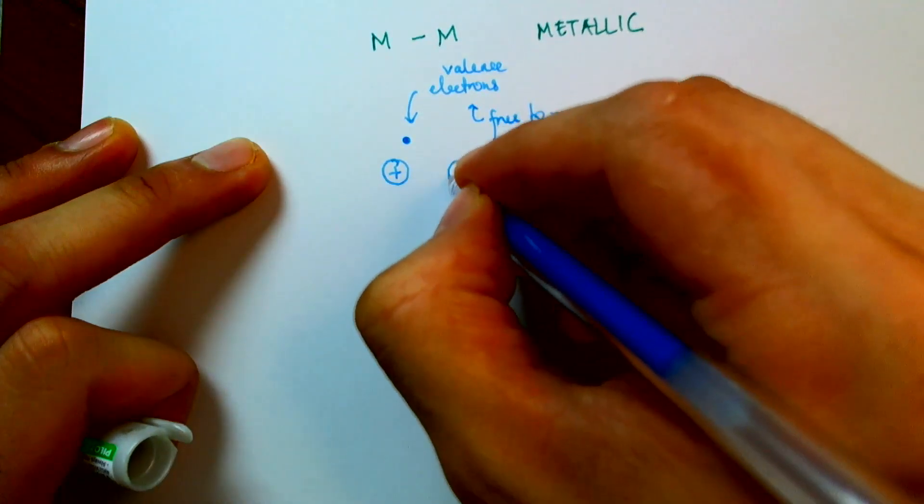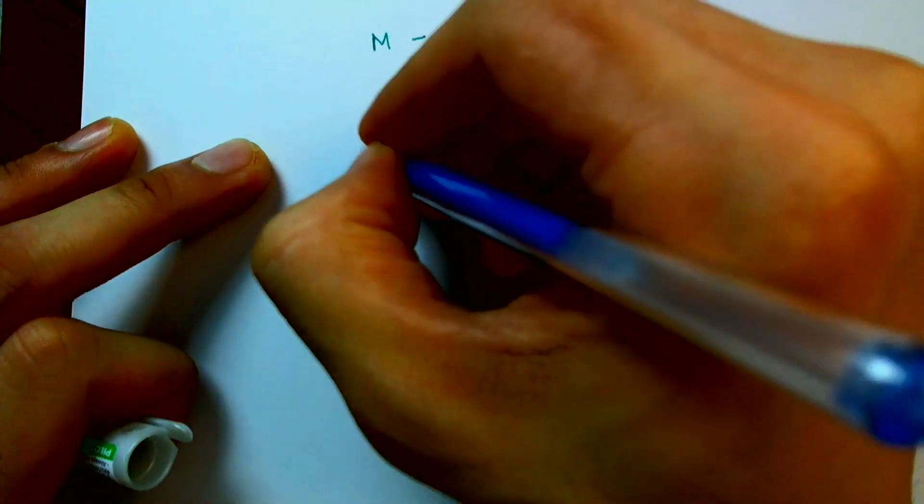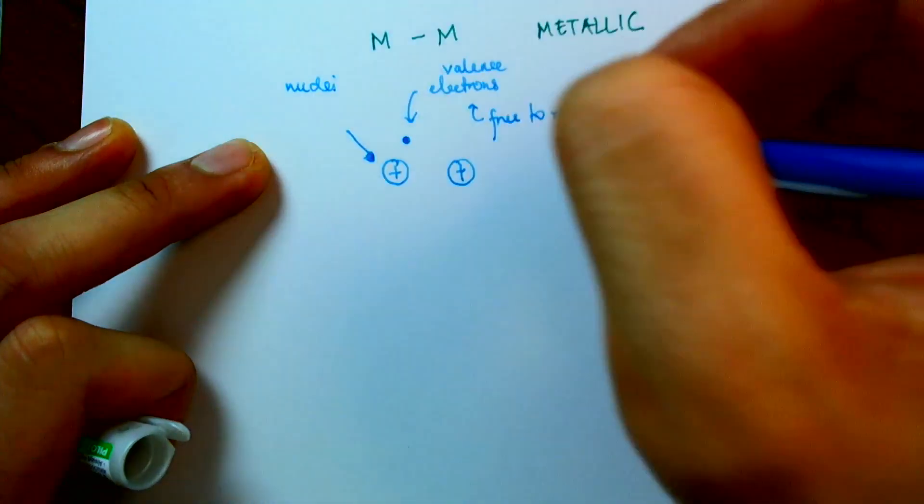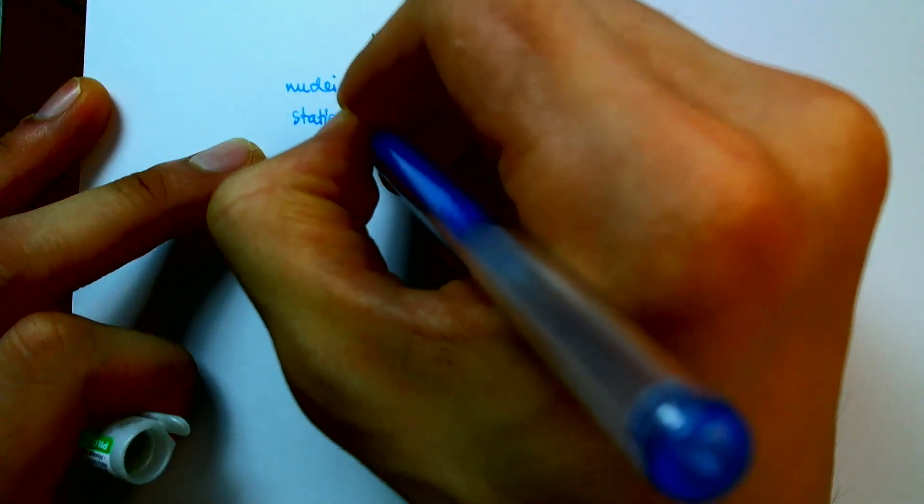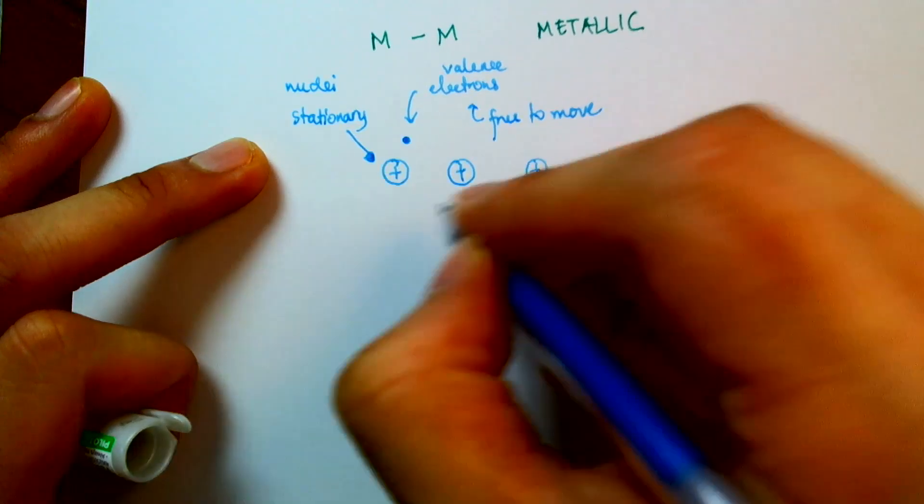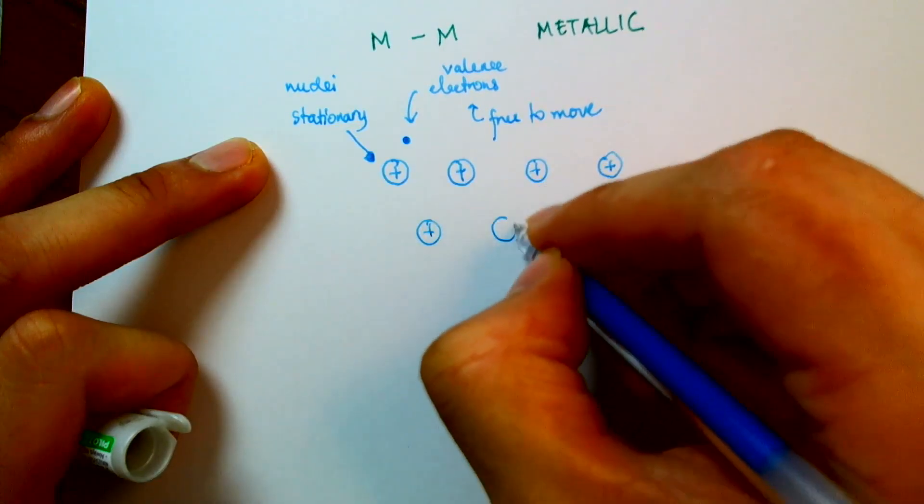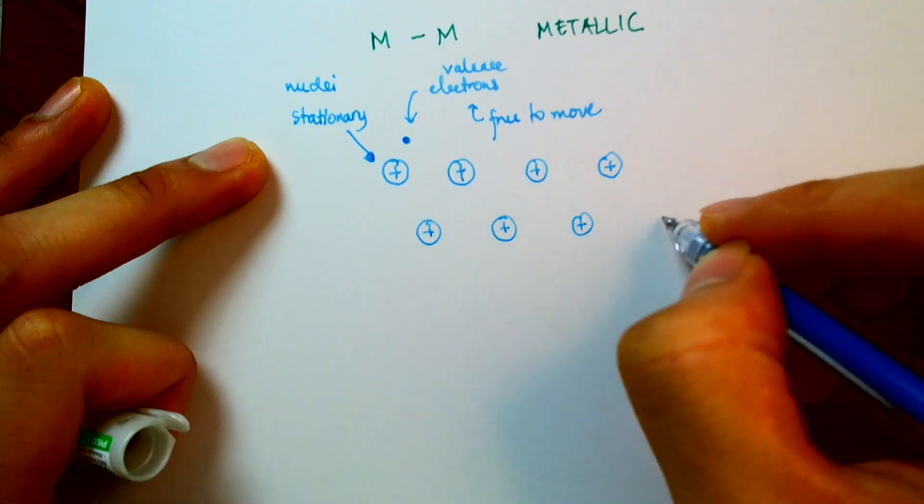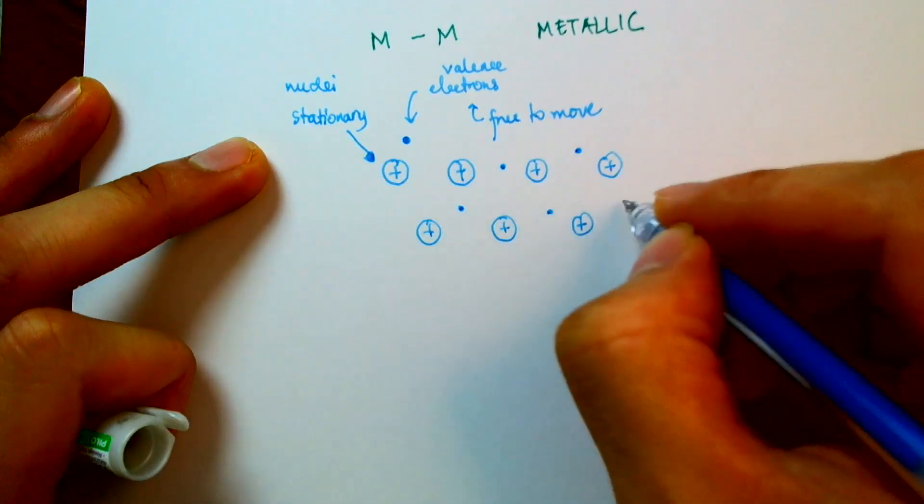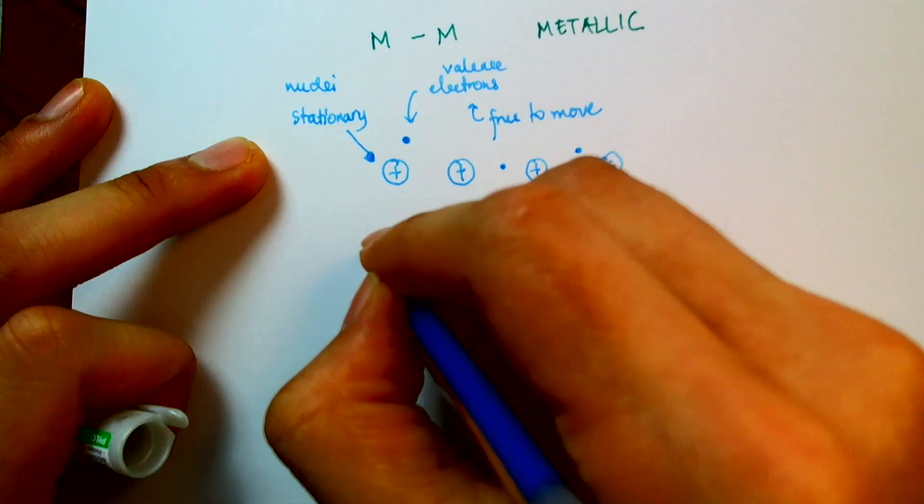So in a metal lattice, I'm going to have stationary nuclei. So the nucleus, or nuclei, plural, are stationary, while the valence electrons are free to move. So I have these stationary metal nuclei with electrons swimming around in them.